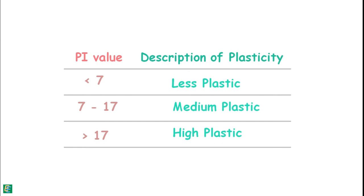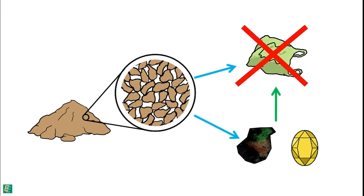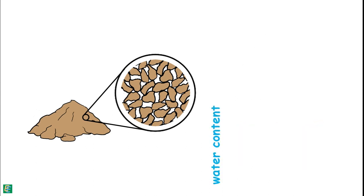Coarse-grained soils cannot achieve the plastic state of consistency because soil needs clay minerals to become plastic, which coarse soils do not contain. Their liquid limit and plastic limit are set to coincide because at higher water content, soil starts flowing without even reaching plastic limit.